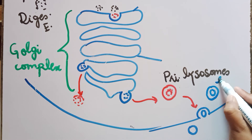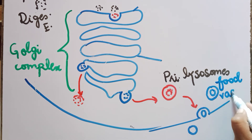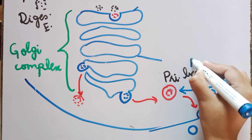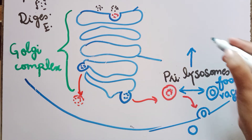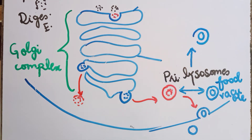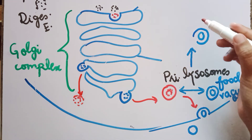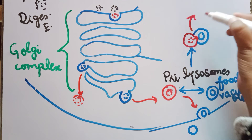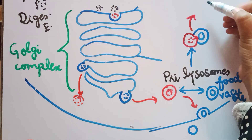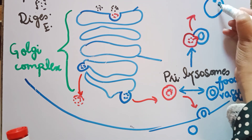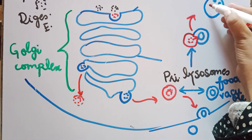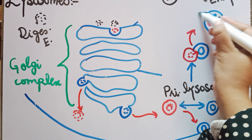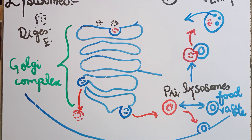This is the food vacuole. If this is a bulky material, the lysosome will migrate towards the food molecule and fuse with the food particles. The digestive enzymes will then convert the food into small components so that the food in small components can be easily absorbed.